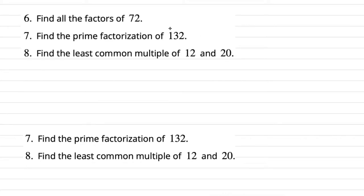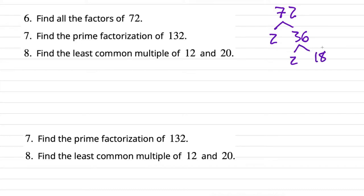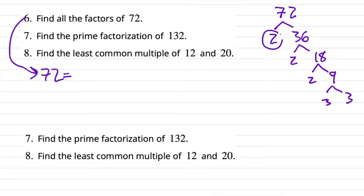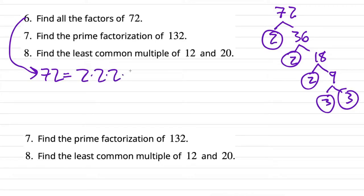Number six: find all the factors of 72. We're going to do a prime factorization factor tree, old school. Two is the first prime number. 72 is even, so it's divisible by 2, giving 2 and 36. 36 is even — divisible by 2 — giving 18. Further dividing, that's 2 and 9. Nine is odd but divisible by 3 and 3. So the prime factorization is 2 × 2 × 2 × 3 × 3. From there we can mix and match to find all factors: 2, 4, 6, 8, 9, and so on.